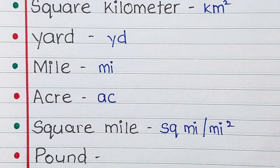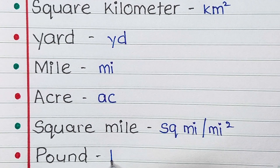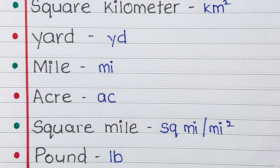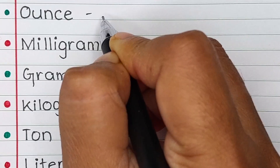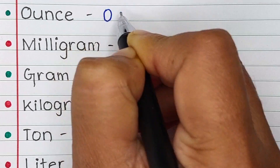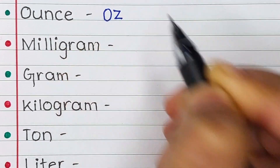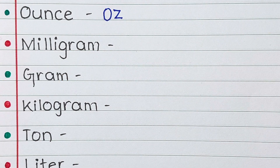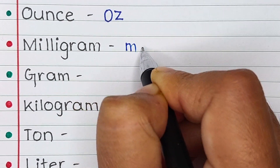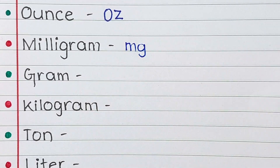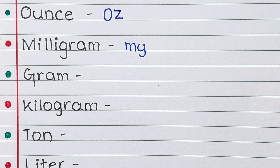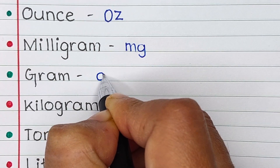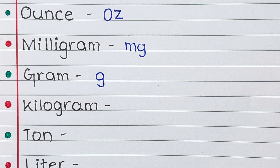Next is pound. Pound is written as small l, small b. Next is ounce. Ounce is written as o z. Next is milligram. Milligram is represented as small m, small g. Next is gram. Gram is abbreviated as small letter g.